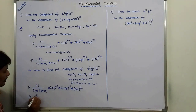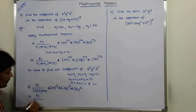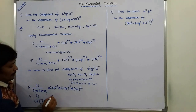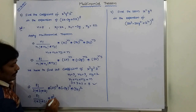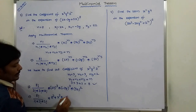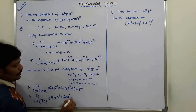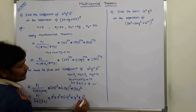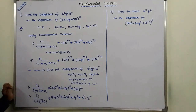That is equal to 8 factorial by 3 factorial into 3 factorial into 2 factorial, into 2 cube into x cube, into minus 3 whole power 3 into y cube, into 5 squared into z square.